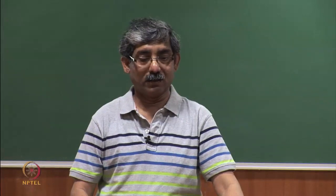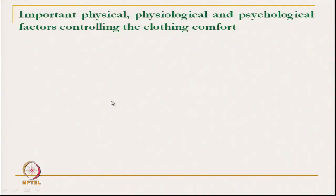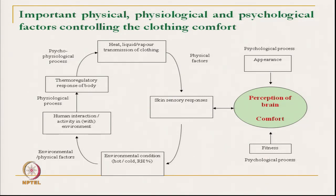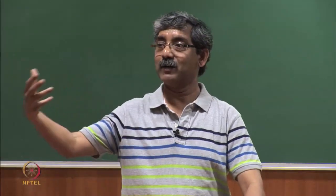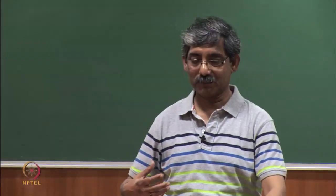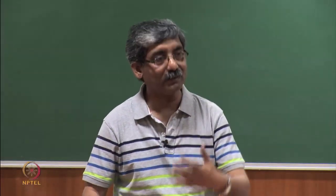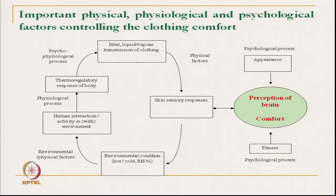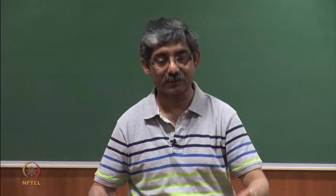The important physical, physiological, and psychological factors which control clothing comfort include environmental conditions. Environmental conditions directly or indirectly affect our sensation — if the environment is warm, ultimately we will get a warm feeling whatever clothing we are wearing. If it is humid, then relative humidity, hot or cold — finally we will get one particular comfort sensation.